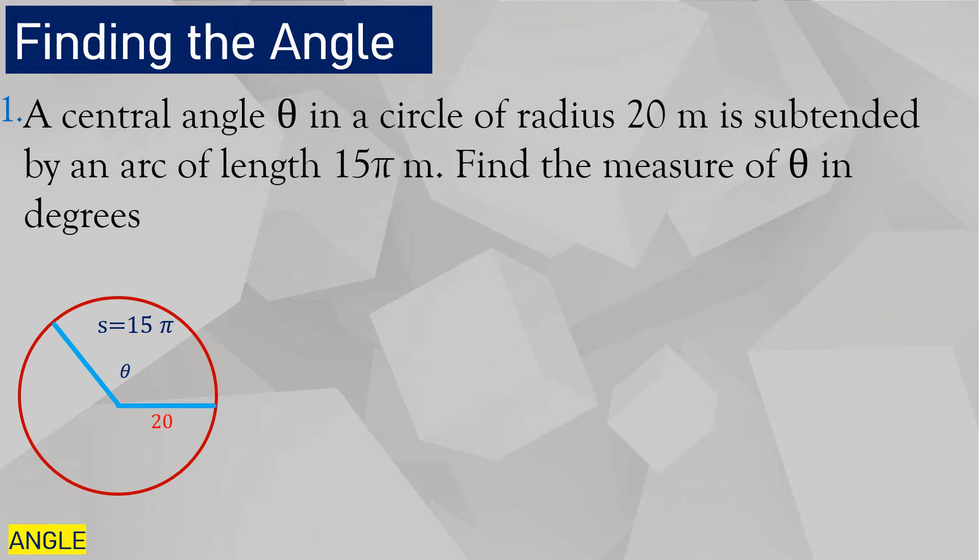Let's have this example. There is a central angle theta, and that is unknown. The arc length being formed by that central angle has a measure of 15 pi meters. The radius is 20 meters. Now how can we find theta in degrees?